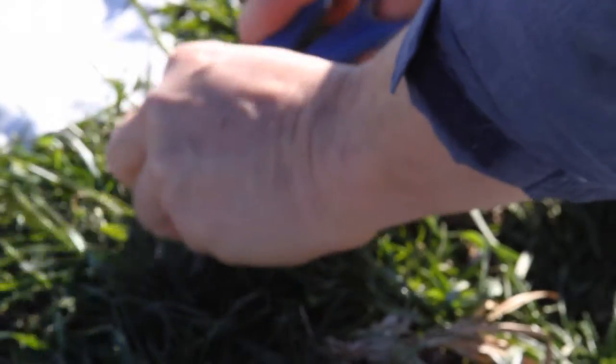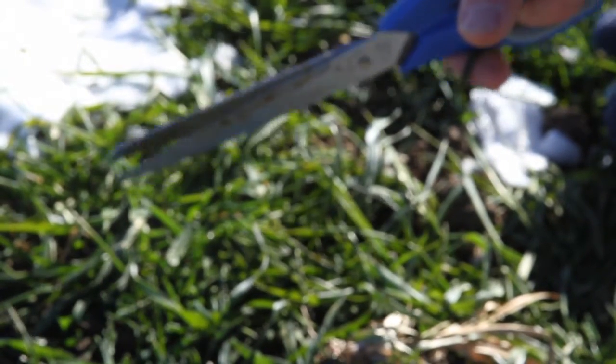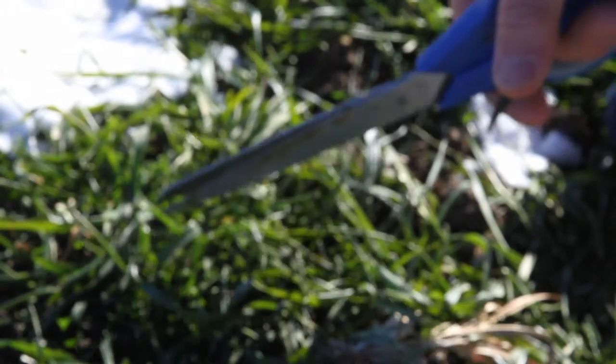All this research that was done on wheatgrass was done with this. This stuff here is equal to 15, 20 pounds of green vegetables. This is what the studies were about, not grown in a tray. This could be cut all winter long. The cold weather doesn't hurt it, it helps it.